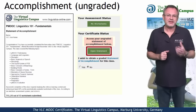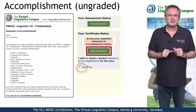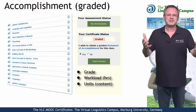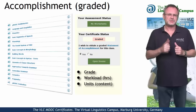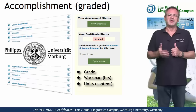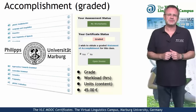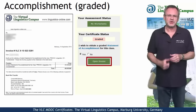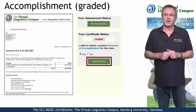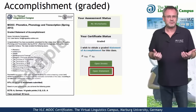If you want to obtain a graded statement of accomplishment, select Yes down here. This most advanced option of certification includes your precise grade, the workload in hours and a complete list of all the tasks you successfully submitted. This graded statement of accomplishment is issued by Marburg University in conjunction with the Virtual Linguistics Campus and it involves a fee of currently 45 euros. Once you have satisfied the conditions and decided to obtain such a certificate, you first have to open the invoice and transfer the money to Marburg University. And once your payment has been accepted, you can download your personal graded statement of accomplishment via mouse click.